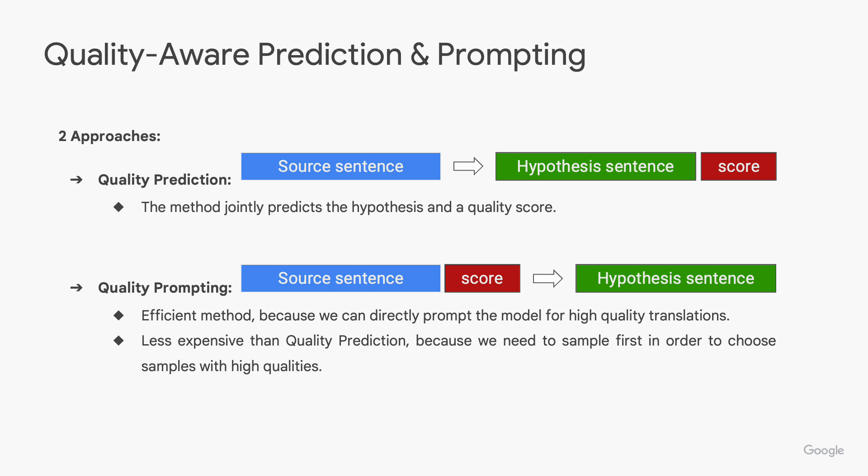Quality-aware prompting, on the other hand, involves adding quality tokens to the source sentence. These tokens act as prompts that guide the model towards generating translations of a specified quality level. Quality prompting is even more efficient than quality prediction because we can directly prompt the model for high-quality translations.